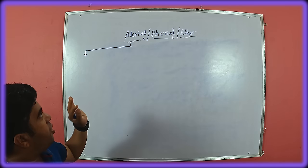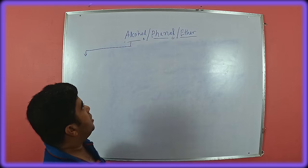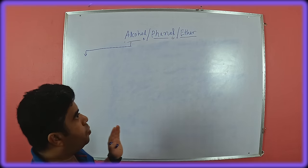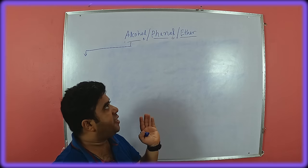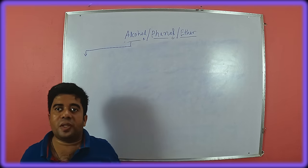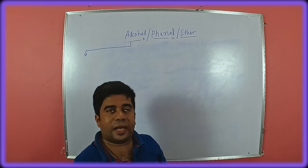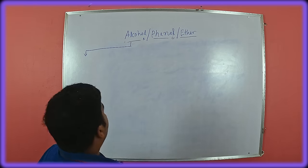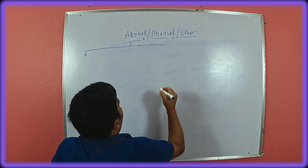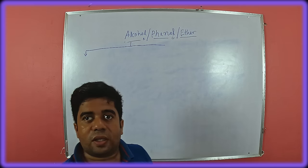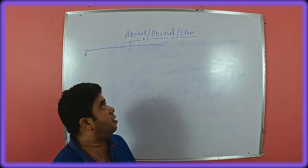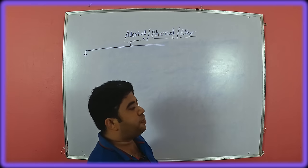Alcohol is the organic compound that contains an OH group. Any aliphatic compound that contains an OH group is alcohol. For example, we all know ethanol, methanol, propanol — these are various examples.